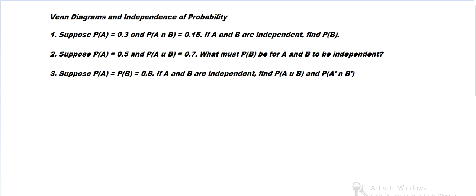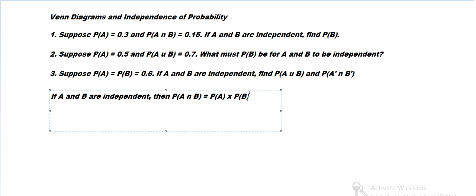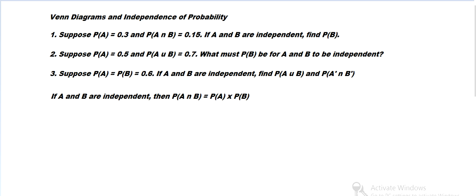The basic concept we'll be using is: if A and B are independent, then the probability of A intersect B — the probability of both occurring — is the product of each probability. They aren't dependent on each other, so the probability of the intersection just comes from the probability of each of them.